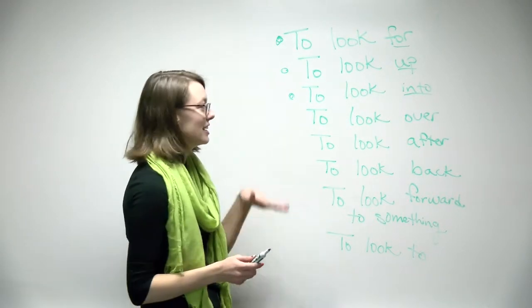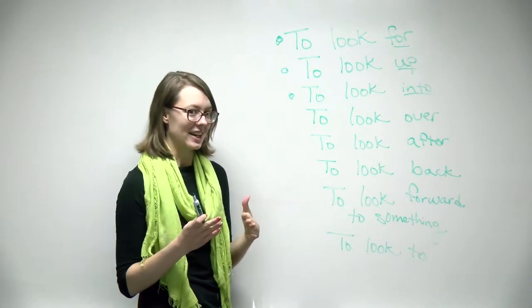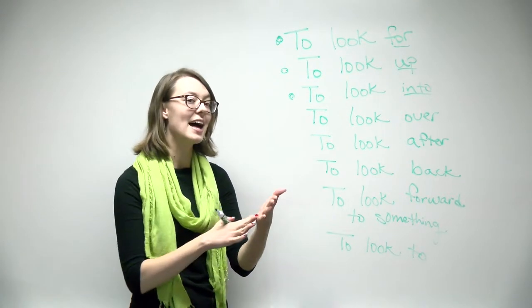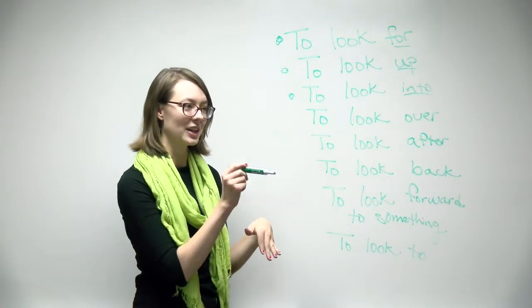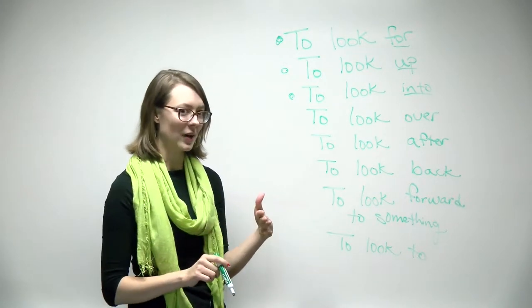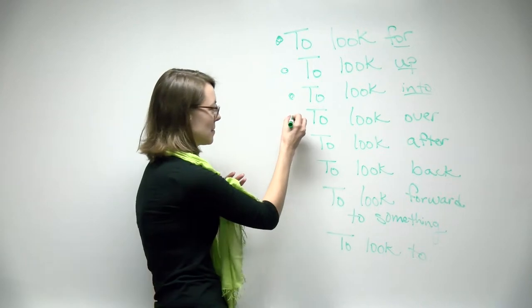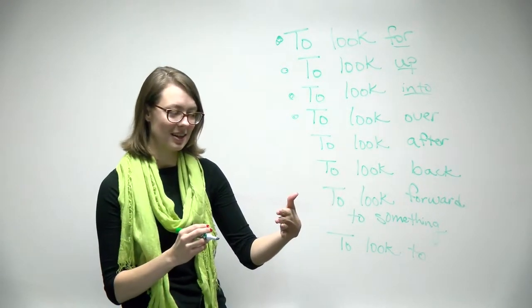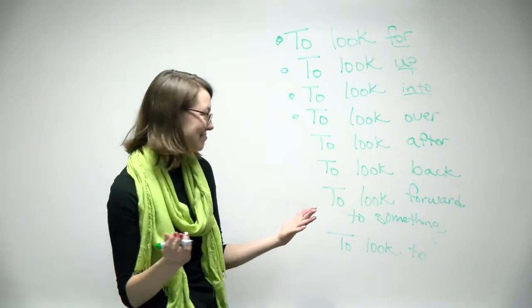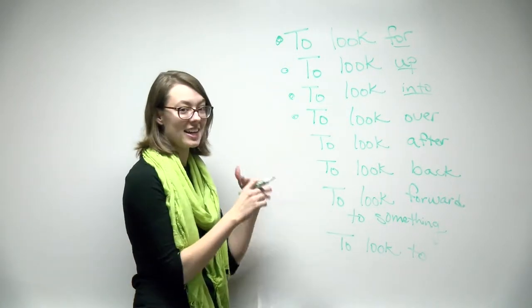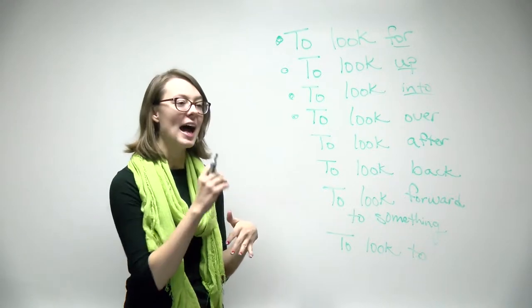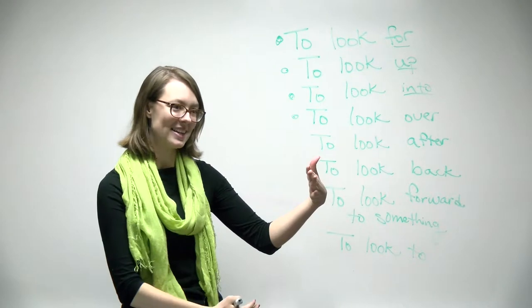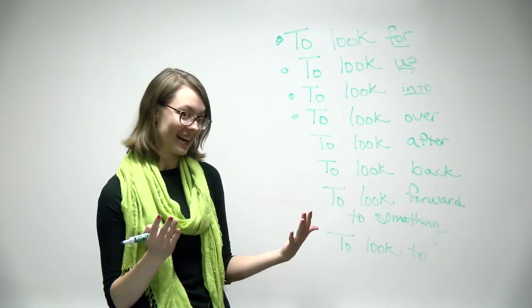To look over something can mean a couple of different things. It can mean to skim over something instead of reading it. To look at the words or sentences very quickly. Like, in high school, I looked over Pride and Prejudice, but I didn't read it. Or, it can mean to edit or to revise something. Like, my professor looked over my essay and told me to rewrite it.